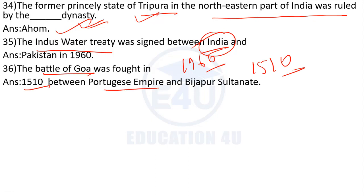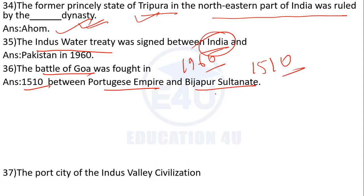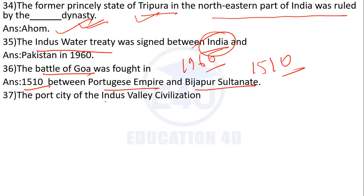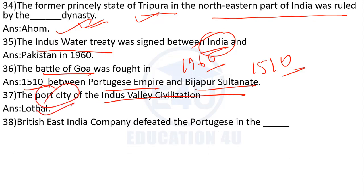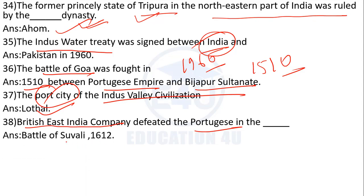The Battle of Goa was fought between the Portuguese Empire and the Bijapur Sultanate. This was related to the civilization of port cities. British East India Company and the Portuguese were involved.